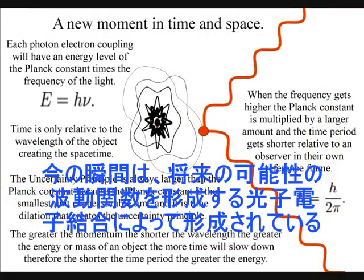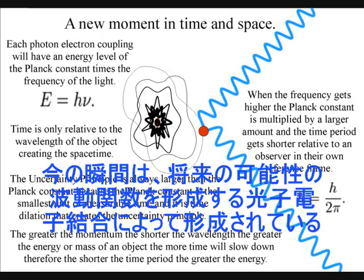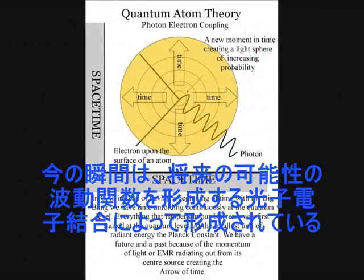In this theory, at the quantum level of the atoms, the moment of now is created by a single photon-electron coupling, creating a wave function of future possibilities.